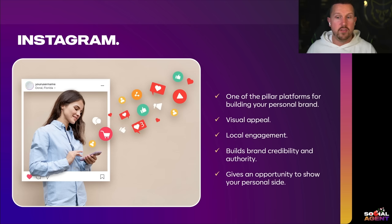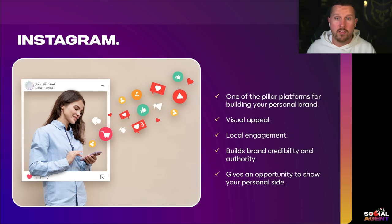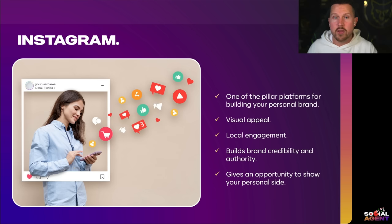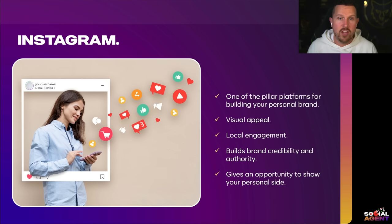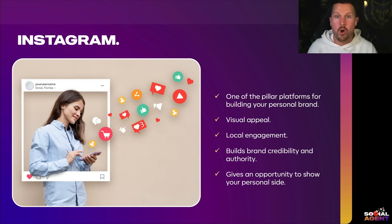Instagram is very visual, which is why it's really great for real estate because it's a very visual platform for a very visual industry. It's a pillar platform because it's so familiar and widely used with billions of active monthly users. The local engagement is really great — when you start using local hashtags related to communities you're trying to farm, it's easy to get found when people living in that community search for the community hashtag and your content shows up. For example, if I wanted to farm Mahogany, I'd use that hashtag and local homeowners would find me.